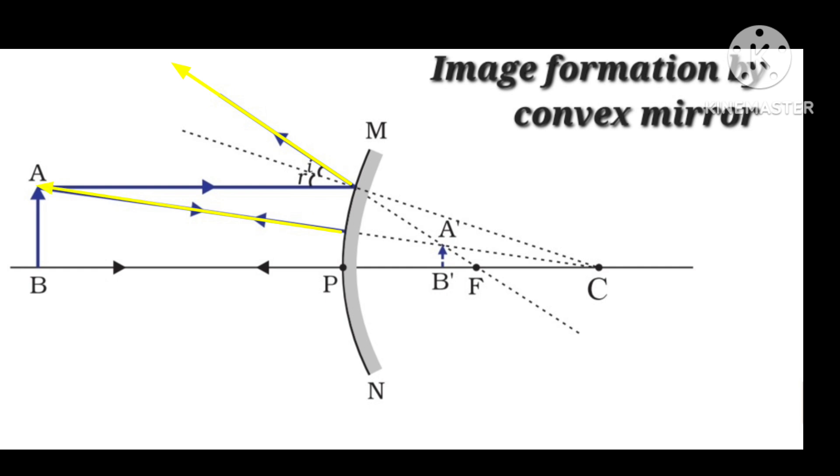We observe that the two reflected rays are not meeting because they are diverging from a point. These divergent rays never meet, so we have to extend them backward. When we extend them backward, these two extended reflected rays meet at a point, A dash.